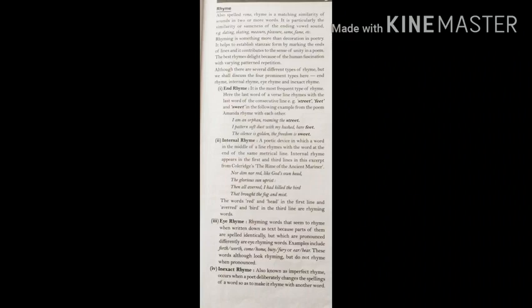Second is internal rhyme — a poetic device in which a word in the middle of a line rhymes with the word at the end of the same line. Internal rhyme appears in the first and third lines. From Coleridge's poem 'The Rime of the Ancient Mariner': 'Nor dim nor red, like sun's own head. / The glorious sun oppressed. / Then all a word I had killed the bird that brought the fog and mist.' Here, red and head in the first line, and word and bird in the third line, are rhyming words.